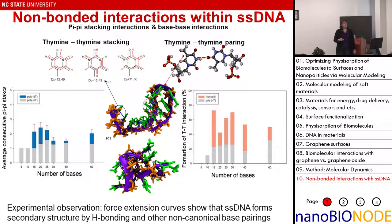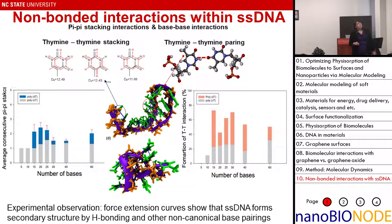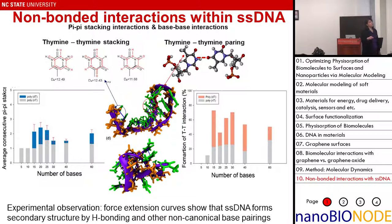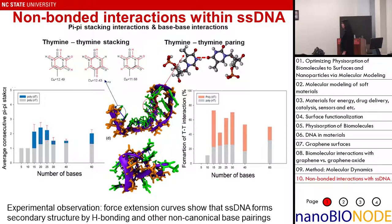If we look at thymine-thymine interactions — it's a wobble base pair — up to 15 base pairs we don't see much thymine-thymine base pairing, and after that we have a certain amount. So we chose the 20-mer DNA for this example, which has some consecutive pi-pi stacks and a certain amount of base pairing. Our simulations agree with force extension curves of single-stranded polythymine DNA showing there is some secondary structure formation associated with non-canonical base pairing.